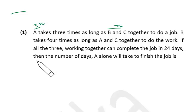B takes 4 times as long as A and C together to do the work. If all three working together can complete the job in 24 days, then we need to find the number of days A alone will take to finish the job. So what do we have? If A, B, C together do the work in 24 days.